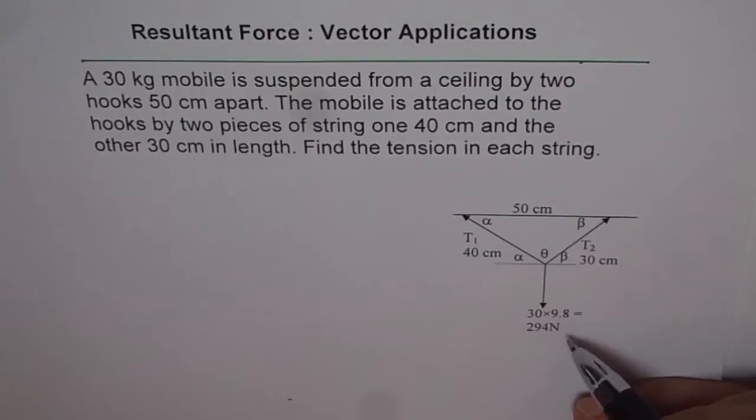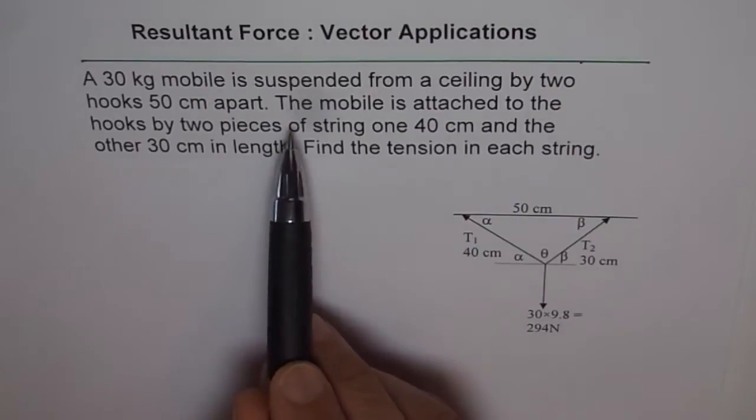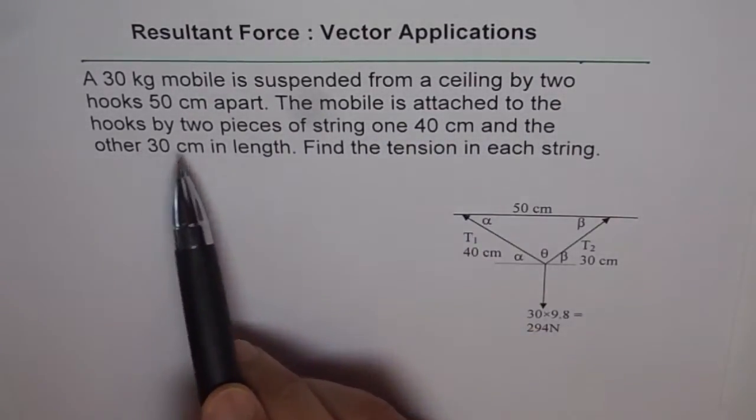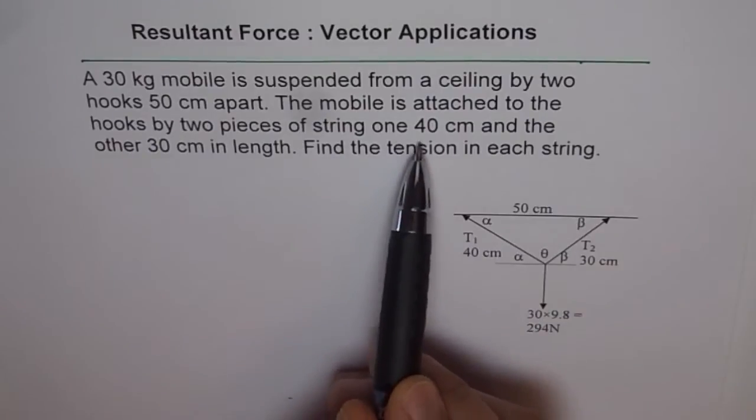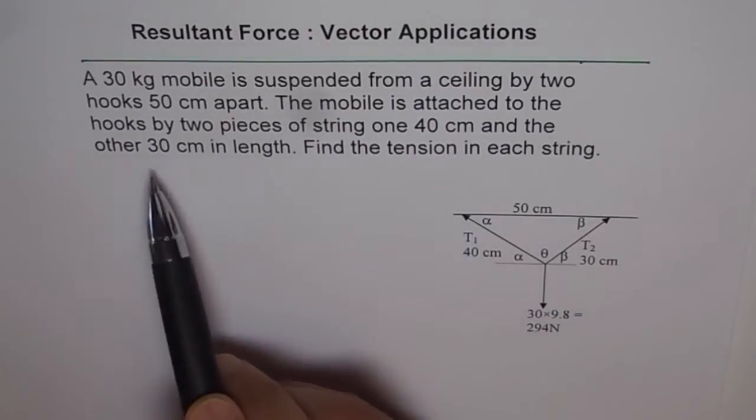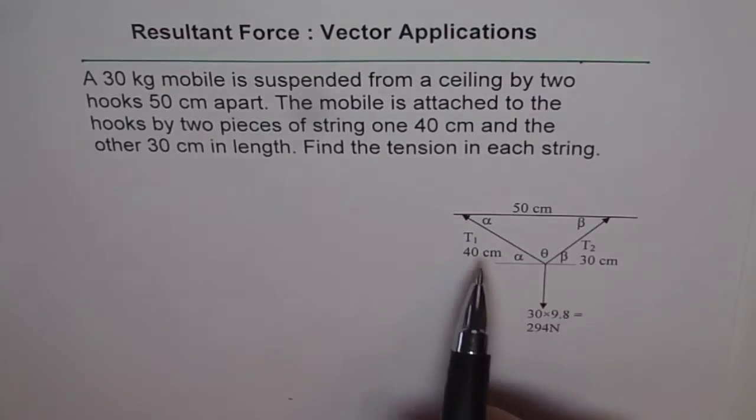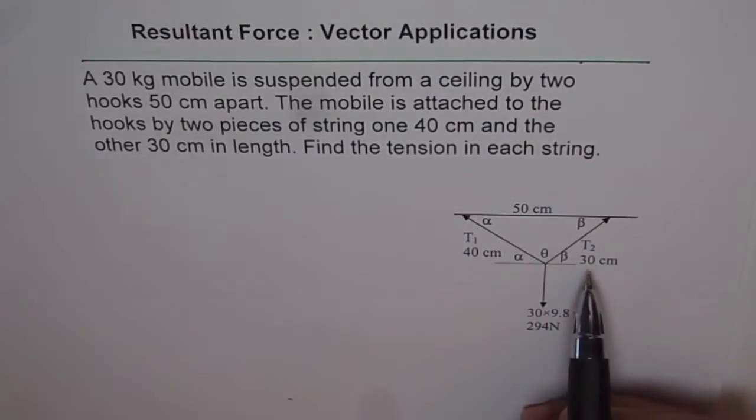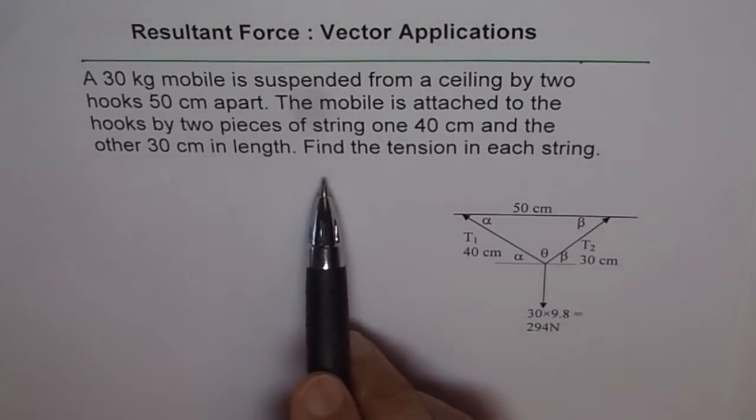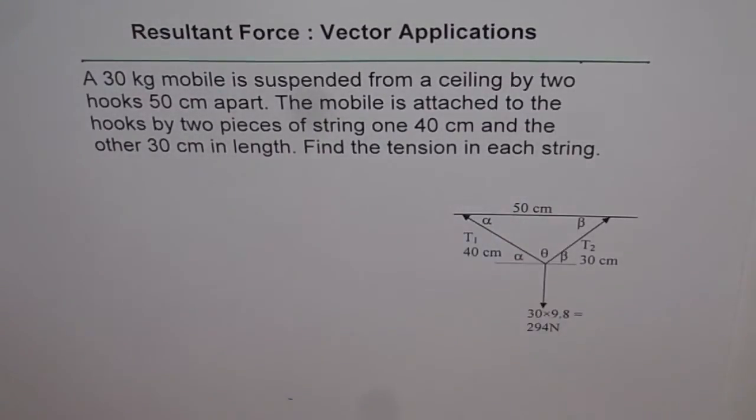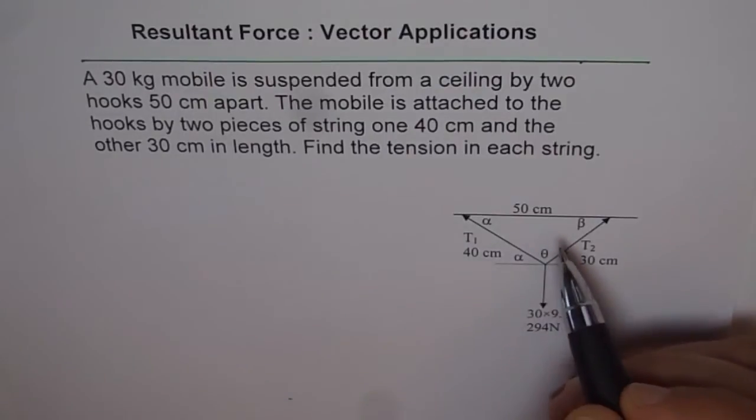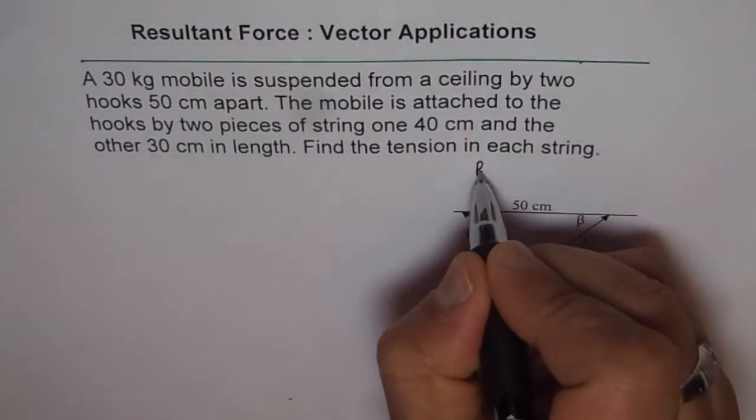Convert your mass into the force of attraction due to gravity. The mobile is attached to the hooks by two pieces of string, one 40 cm and the other 30 cm in length. Find the tension in each string. Let the tension in each string be T1 and T2. This is a position diagram.